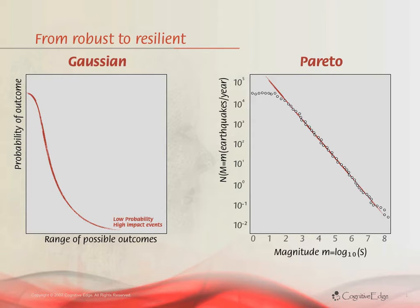Ignore for the moment the slight deviation at the top left — that is significant and we'll come on to that on the next slide. Power laws occur naturally if you take virtually anything: there are a large number of fleas, a small number of elephants; a large number of villages, a small number of cities.